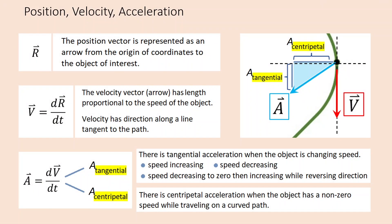The takeaway is that the position vector is represented as an arrow from the origin of coordinates pointed toward the object of interest. The velocity arrow has a length proportional to speed, and its direction is always along the tangent line of the path. Acceleration is more complex — there are two kinds: tangential acceleration, related to the object changing speed, and centripetal acceleration, related to the object changing direction.